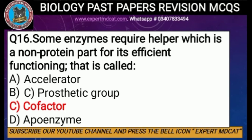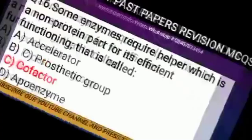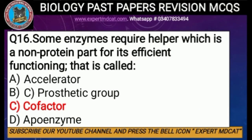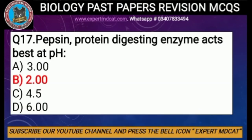Question number sixteen: enzymes which need a helper non-protein part for efficient functioning — that part is called a cofactor. Many enzymes are entirely protein, but some have non-protein parts attached. These non-protein parts are specifically called cofactors, which can be prosthetic groups, coenzymes, or activators. If the cofactor is an inorganic ion, we call it an activator. Question number seventeen: pepsin, the protein-digesting enzyme, acts best at pH 2, as it is released in the stomach.